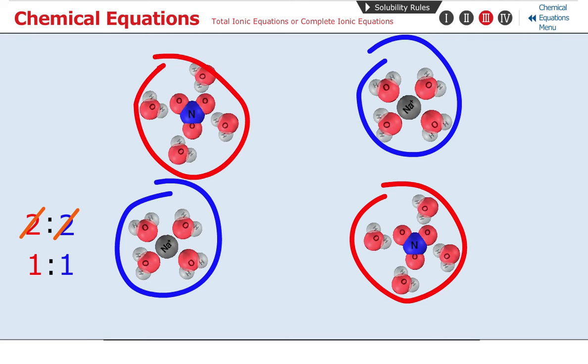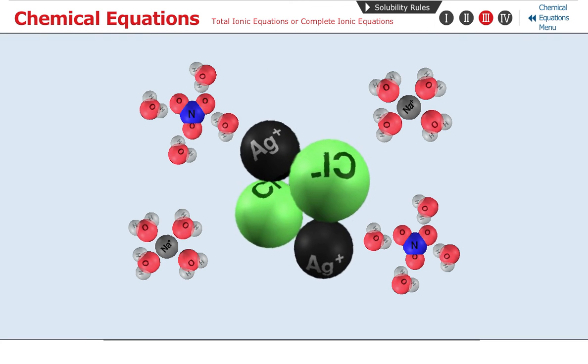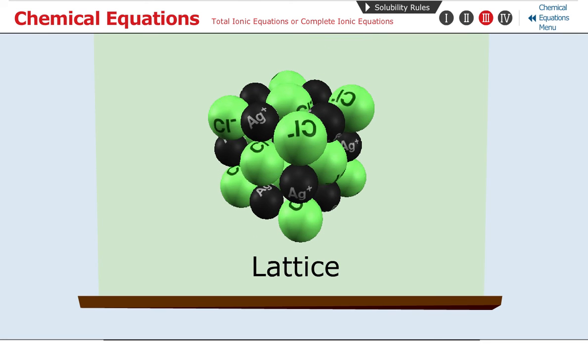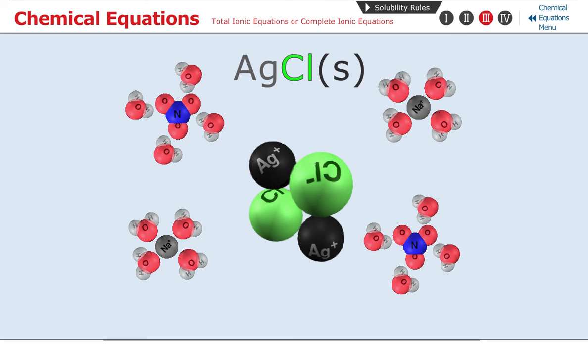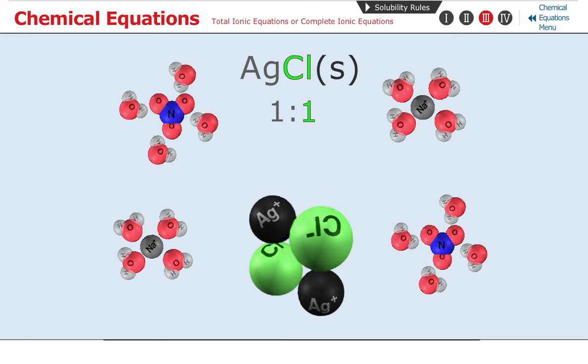Also notice in the atomic level animations that the precipitate is represented as a network of silver ions and chloride ions called a lattice. The number of ions in the lattice is a multiple of the simplest whole number ratio shown by the formula AgClS, which is a 1 to 1 ratio of Ag positive to Cl negative.